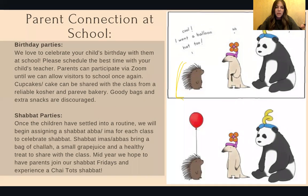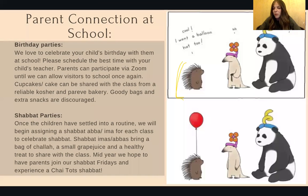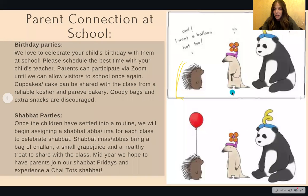For Shabbos parties — we normally have an abba and ima from a family join in each classroom on Friday. Since we're not having parents in right now, we're going to start by getting the kids into the Shabbos party routine in the classroom. Then we'll have a sign-up sheet for Shabbos abba and ima — when it's your child's turn, you'll send in a bag of challah rolls, a small grape juice, and a healthy treat to share with the class. Mid-year, hopefully as soon as we're allowing parents back in, we'll resume regular Shabbos parties where families can join every Friday.